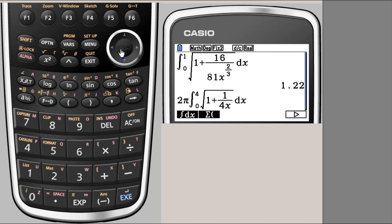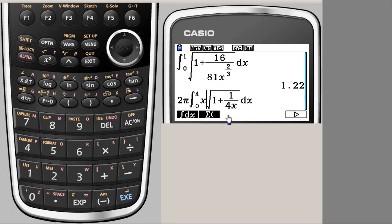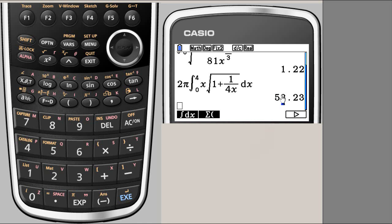Getting the cursor to the right position is the only trick. Here it is. Now our expression is correct: x square root of 1 plus 1 over 4x. We say execute, and again to two decimal places we get 52.23. I will try to see how to get more digits.